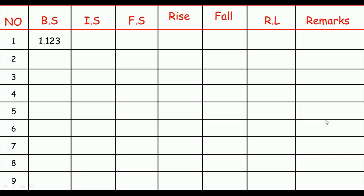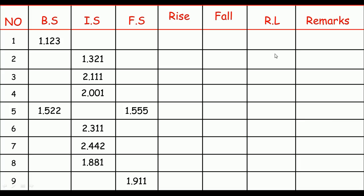Let me draw some rows — in this form, one, two, three, four, five, six, seven, eight, and of course nine. Let's say we have taken some readings on the leveling staff. The main purpose of solving this table is to calculate the RL of each point. Remember, the back sight is always taken at a benchmark, so the first RL must be known. As the RL of the first point is known, we need the RL of all the remaining points from two to nine.